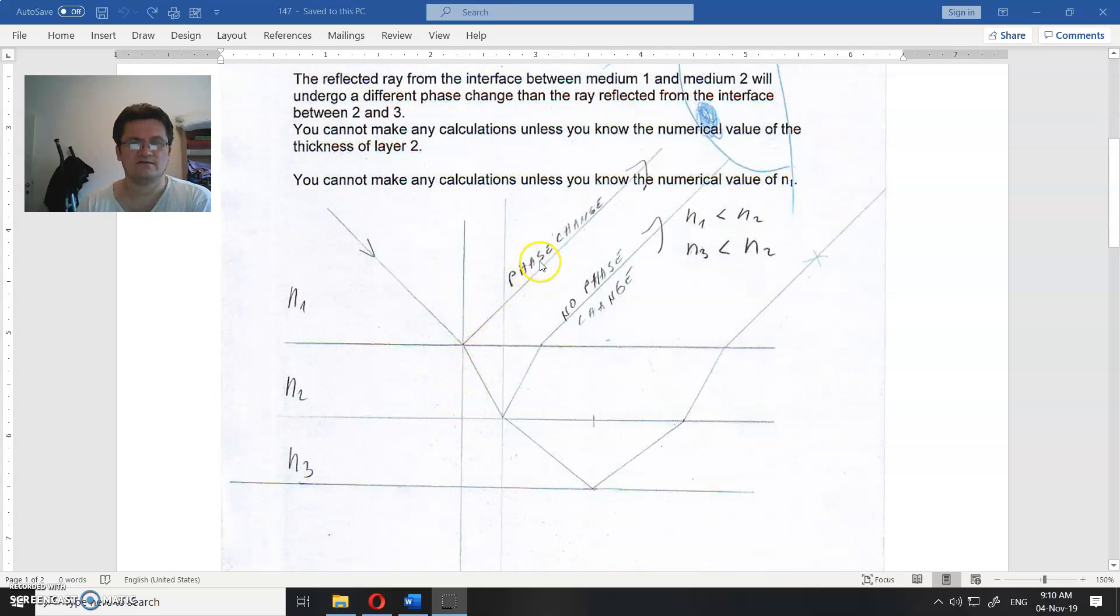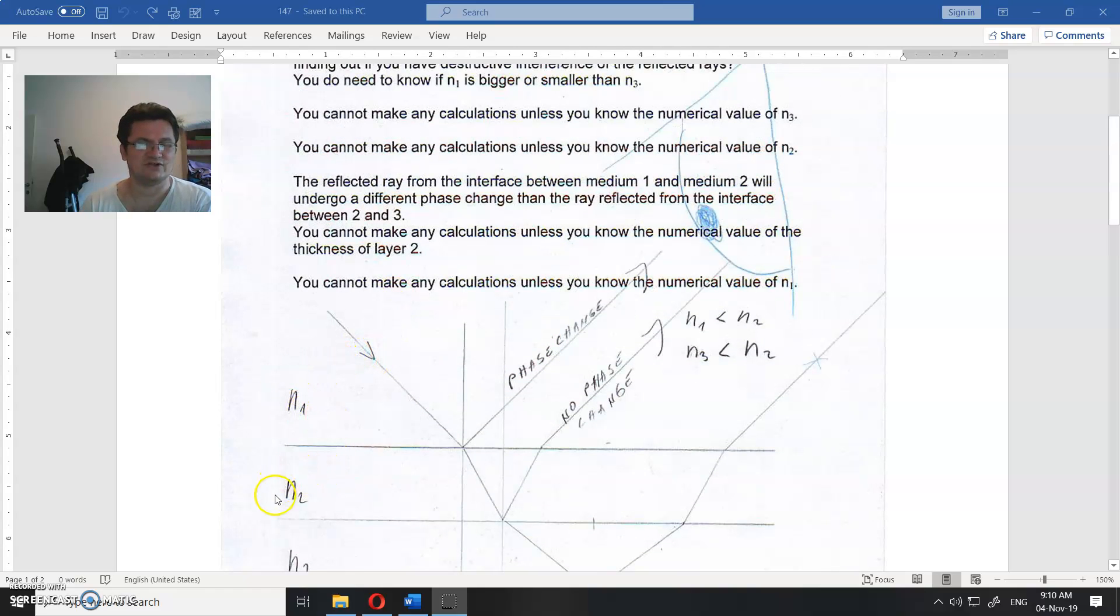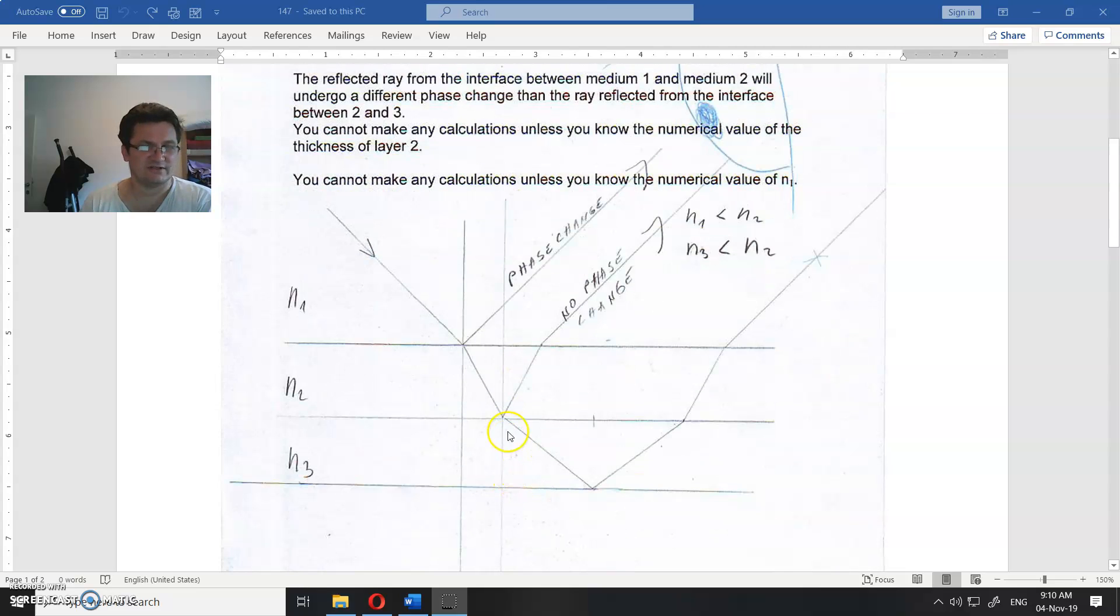There is a phase change here. Why is that? Well, because this n1 is larger than this and there is a phase change in the reflected ray. There is no phase change in this reflected ray. This is actually refracted but is reflected on this surface. There is a phase change here but there is no phase change here.